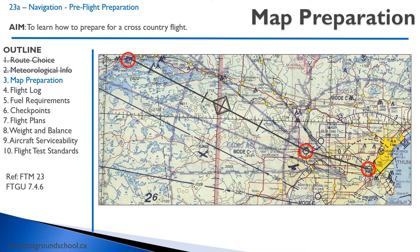As we covered in the navigation portion of your ground school, let's discuss how to prepare our map. We have red circles — let's say we're going from Thunder Bay to Shibandawan, the float base there. We're going to use Kakabeka Falls as our set heading point, so the formal part of our navigation is going to take place between Kakabeka Falls and our destination.